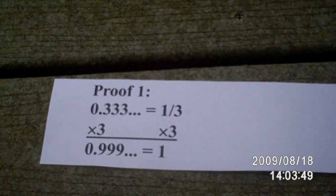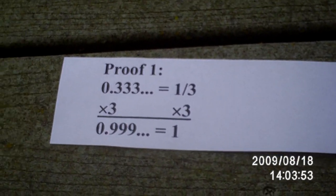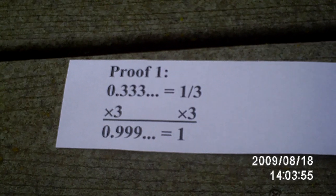The first one states 0.3 repeating is equal to one-third. Simple enough. Multiply both sides by 3 and then 0.9 repeating equals 1.